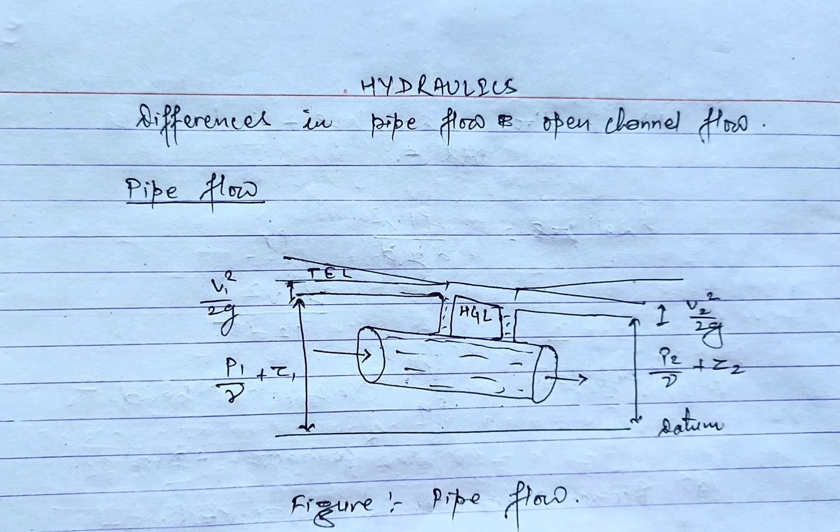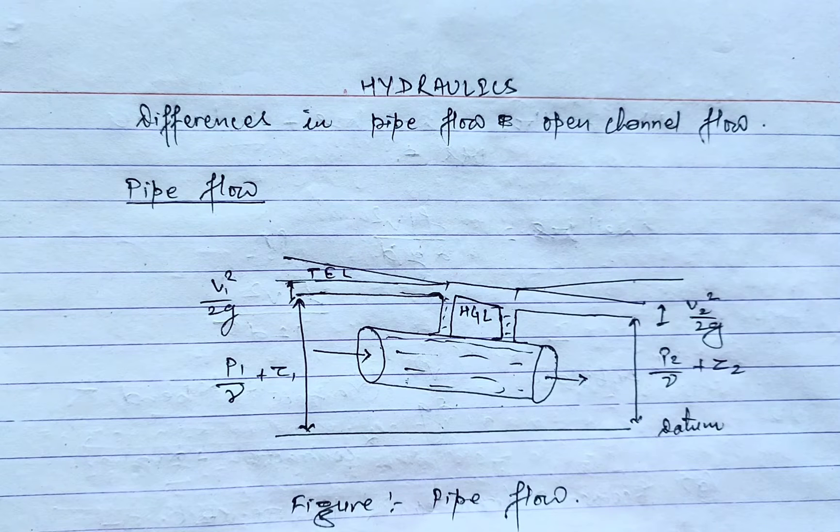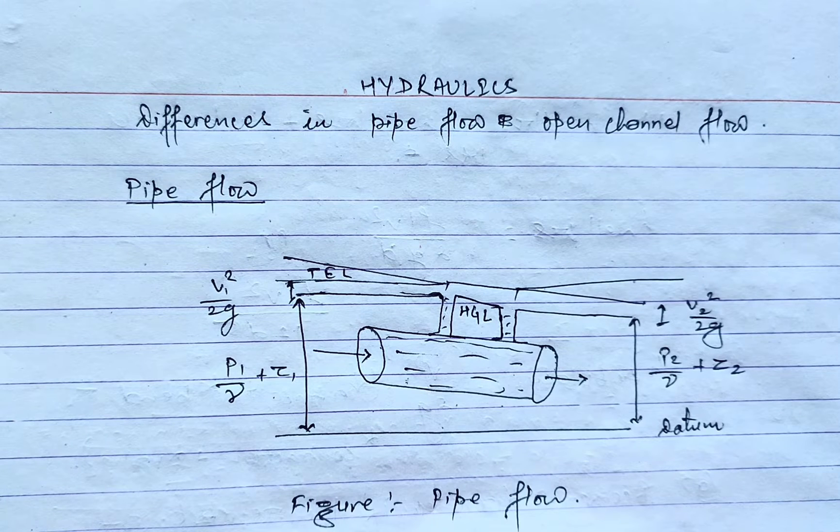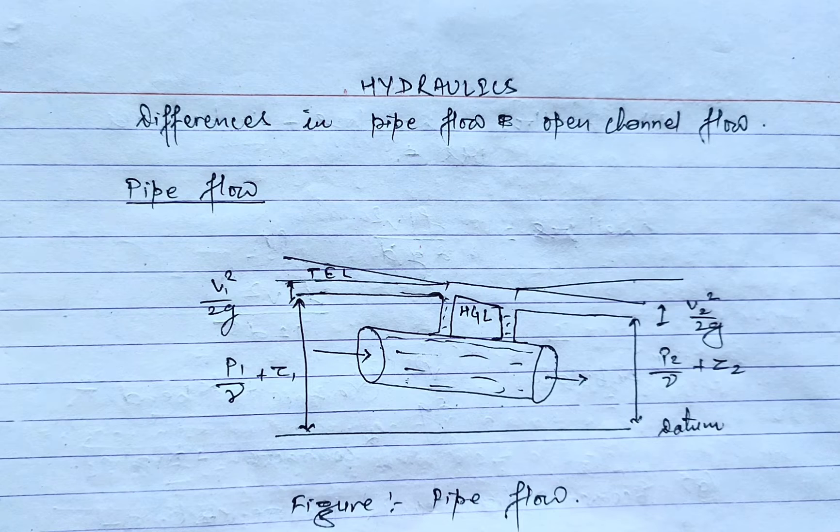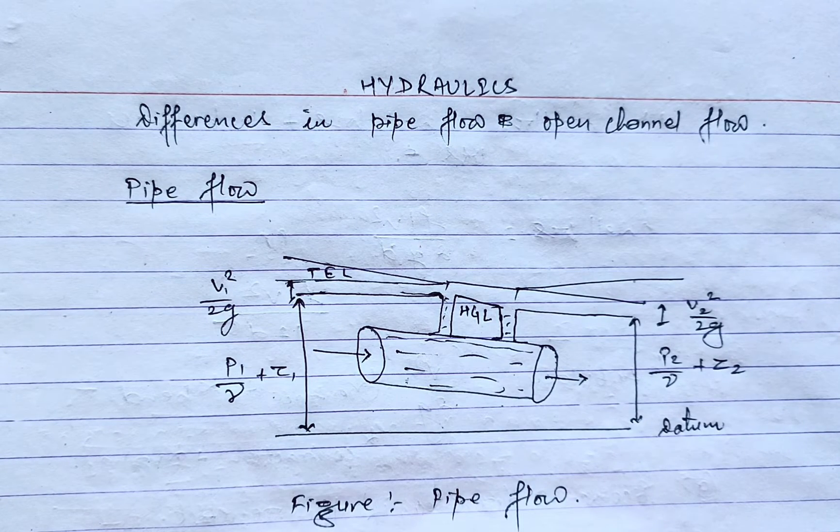Let's know more about pipe flow. A pipe is a closed conduit which is used for carrying fluid under pressure. These pipes are generally circular in section. Flow inside pipe is considered as pipe flow only when it is running full with no free surface inside it. Flow in the pipe can be either laminar flow or turbulent flow.